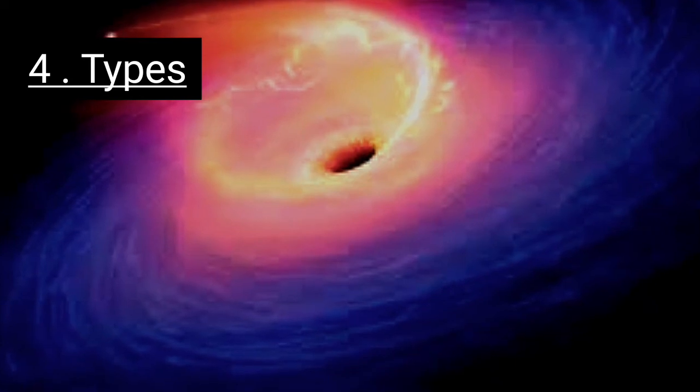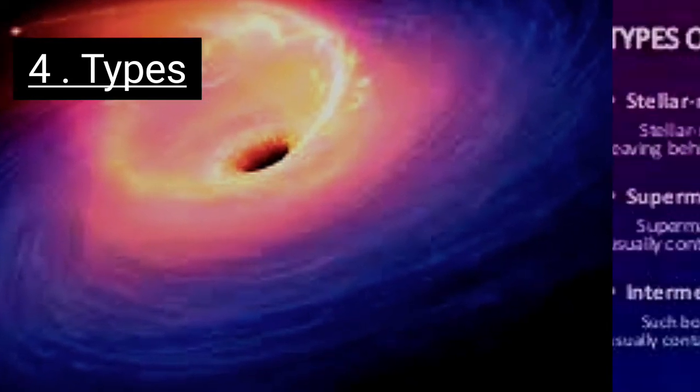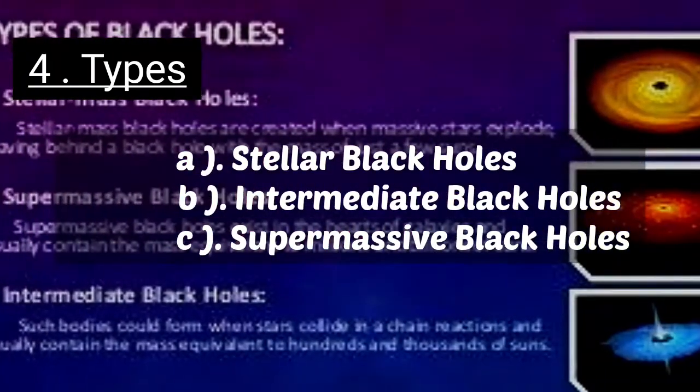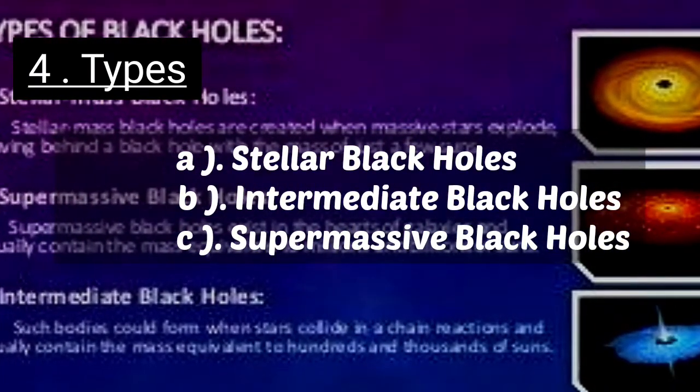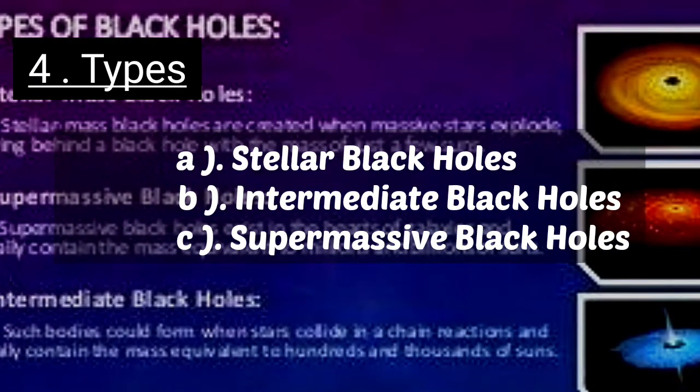There are three types of black holes: 1. Stellar black holes. 2. Intermediate black holes. 3. Supermassive black holes.